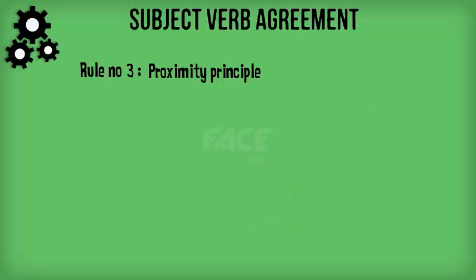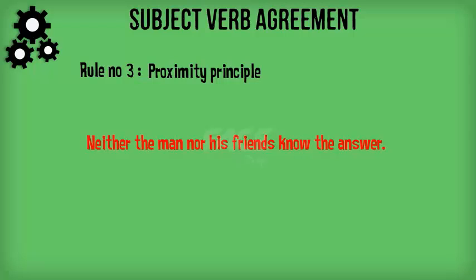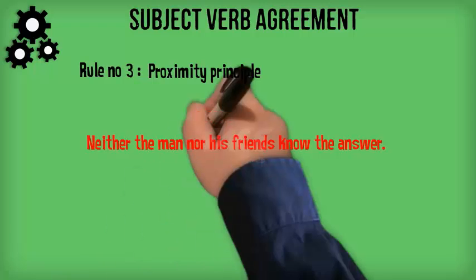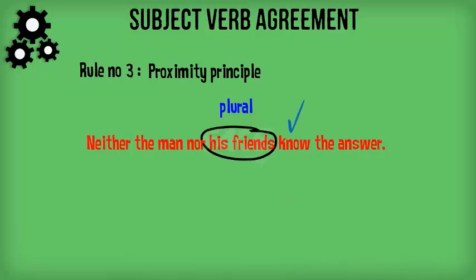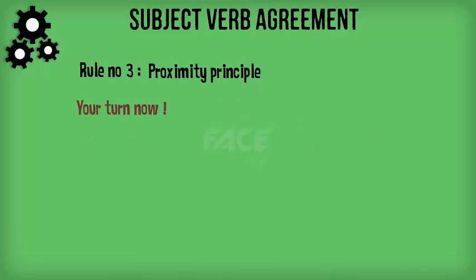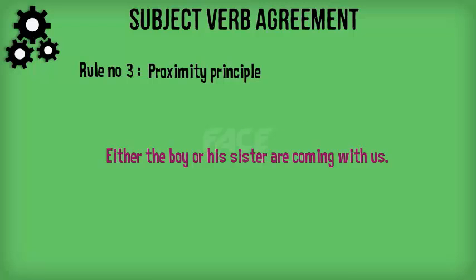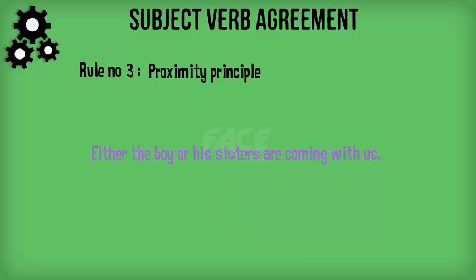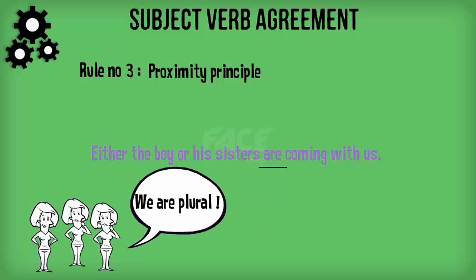Another example: 'Neither the man nor his friends know the answer.' The subject here is 'his friends,' which is plural, and hence a plural verb 'know' is used. Practice: 'Either the boy or his sister are coming with us.' This sentence has an error. The subject closest to the verb is 'his sister,' which is singular, so the correct sentence is: 'Either the boy or his sister is coming with us.' However, 'Either the boy or his sisters are coming with us' is correct, as 'his sisters' is plural.